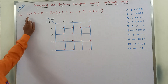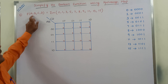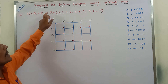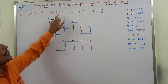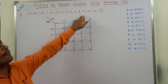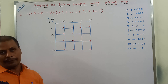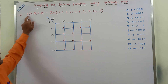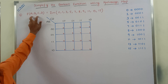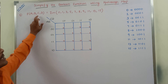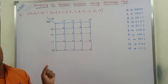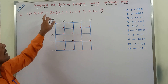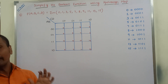The given Boolean function is f(a, b, c, d) = σm(0, 1, 3, 5, 7, 8, 9, 11, 13, 15). The given Boolean function contains four variables — a, b, c and d — so that we have to use a four-variable Karnaugh map to simplify this Boolean function.